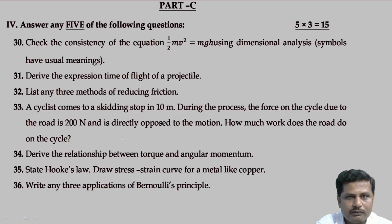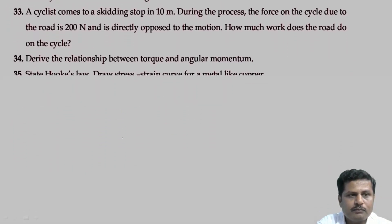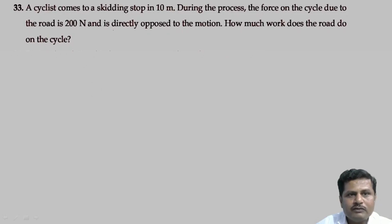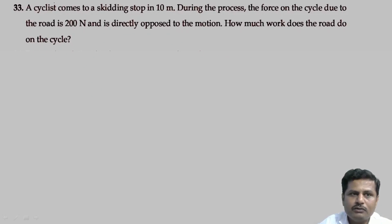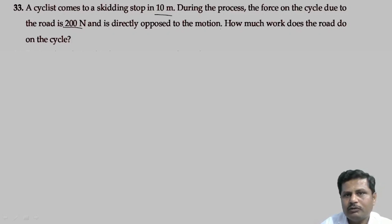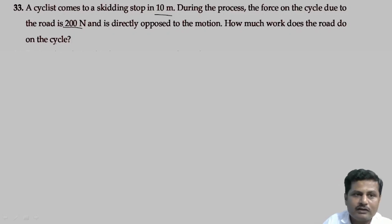The first numerical is present in part C, question 33. A cyclist comes to a skidding stop in 10 meters. During the process, the force on the cycle due to the road is 200 Newton and is directly opposed to the motion. How much work does the road do on the cycle?